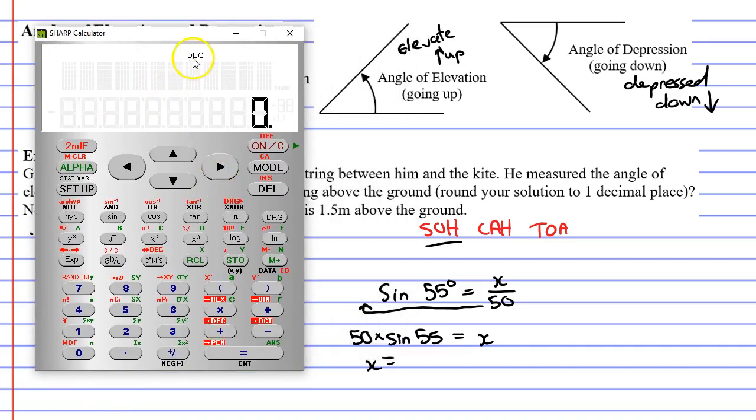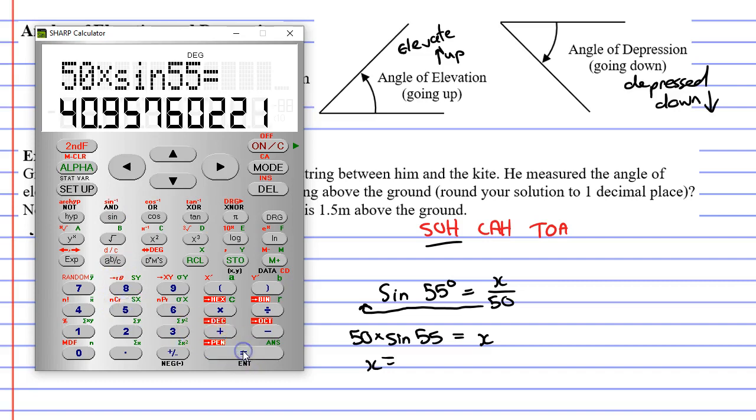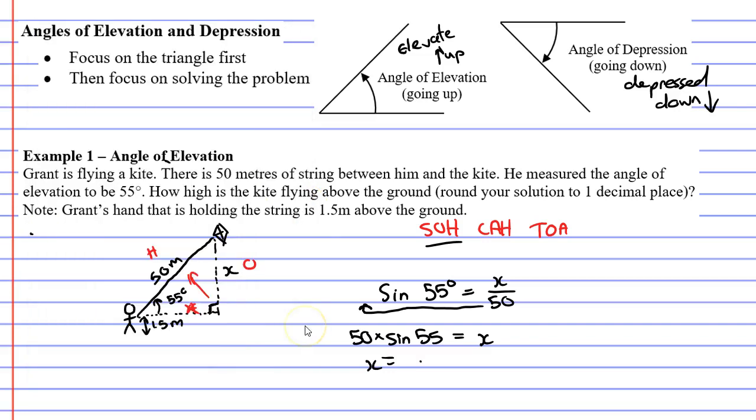Now we want to give it to one decimal place, and when we round this to one decimal place, we get 41.0 meters. That's the length of the vertical height of the triangle.